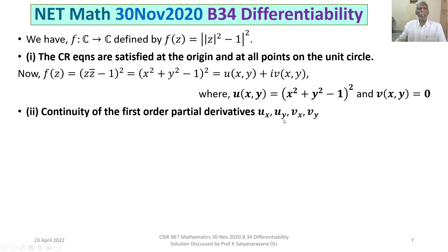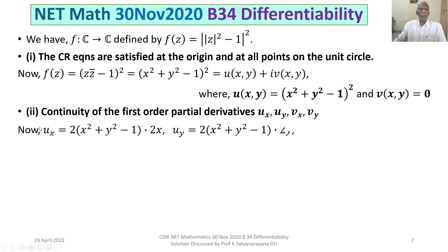We now discuss the continuity of the first-order partial derivatives ux, uy, vx, vy at the above points — namely at the origin and at all points on the unit circle. The partial derivative of u with respect to x is 2(x² + y² - 1)·2x. The partial derivative of u with respect to y is 2(x² + y² - 1)·2y. The partial derivatives of v with respect to x and y are both equal to 0.